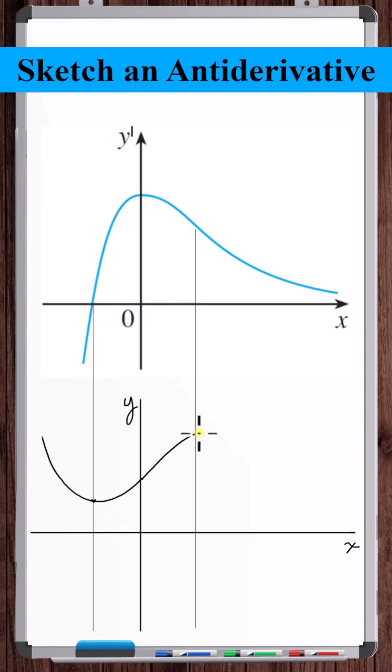This trend continues, and as x approaches infinity, the slope of y is approaching zero, but still always remains positive as x approaches infinity.